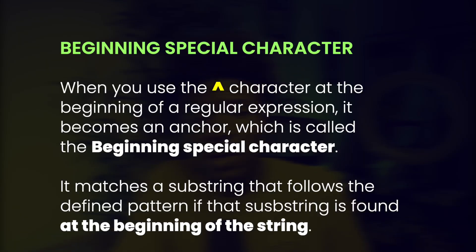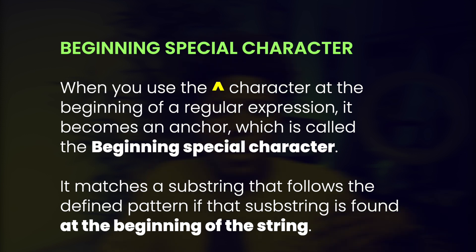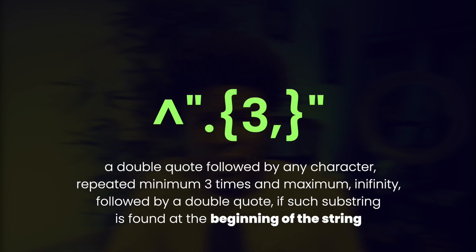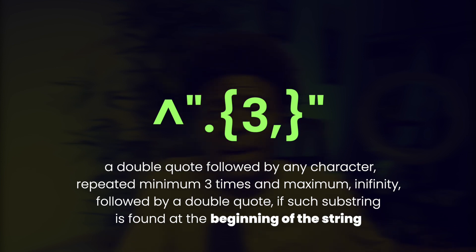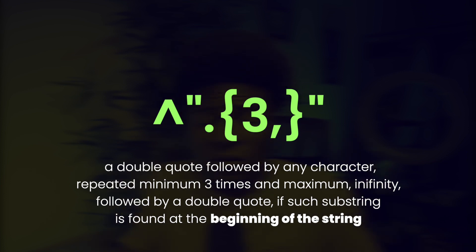The second special character is the beginning character. When you use the caret at the beginning of a regular expression, it becomes an anchor called the beginning character. Using this character, the pattern will match the beginning of a string if the pattern that follows can be found at the start of the string. For example, a pattern like caret double-quote dot{3,} double-quote would match the beginning of a string that starts with a double quote, followed by any character three or more times, followed by another quote.